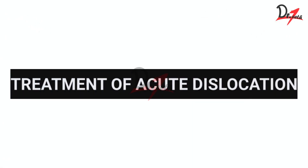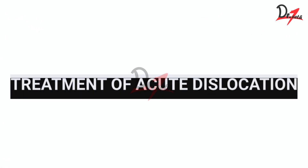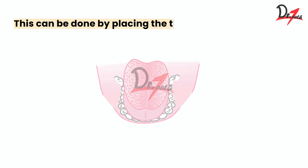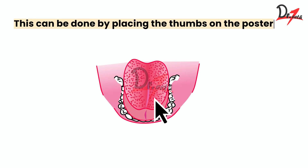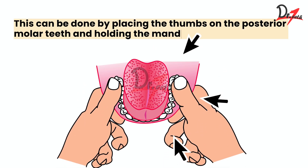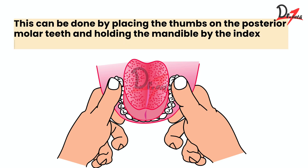Assalamu alaikum everyone. Treatment of acute dislocation. This can be done by placing the thumbs on the posterior molar teeth and holding the mandible by the index finger of both the hands.